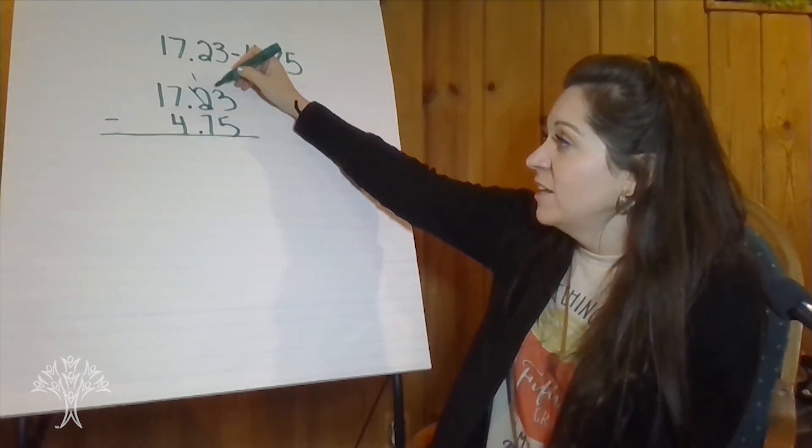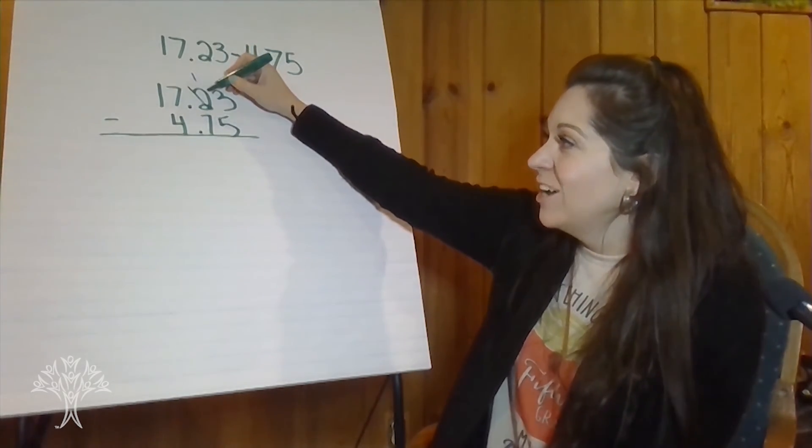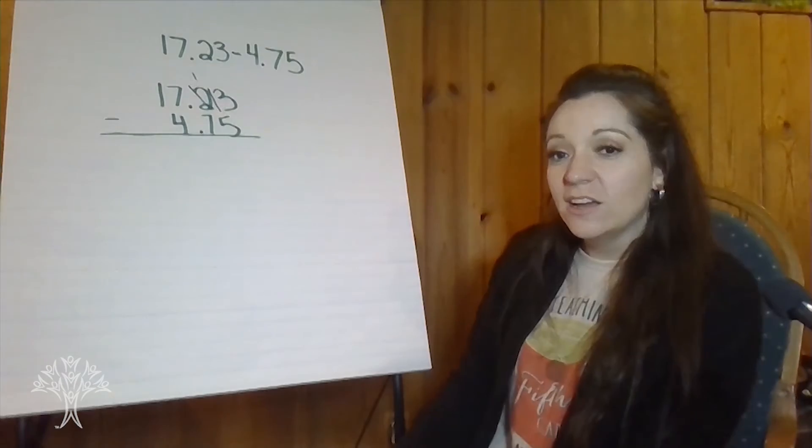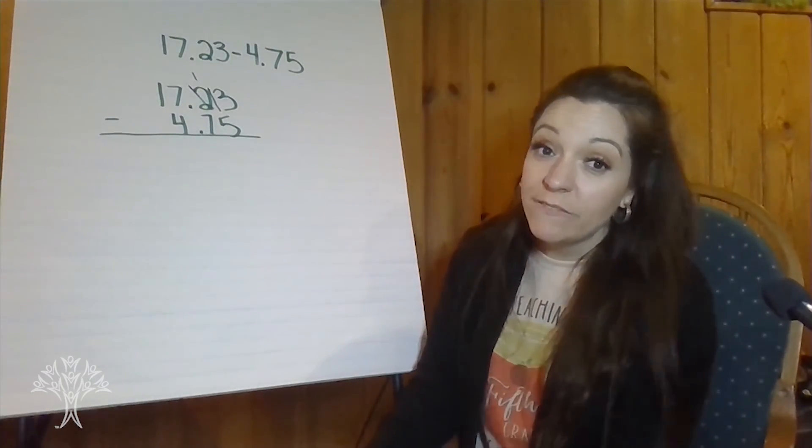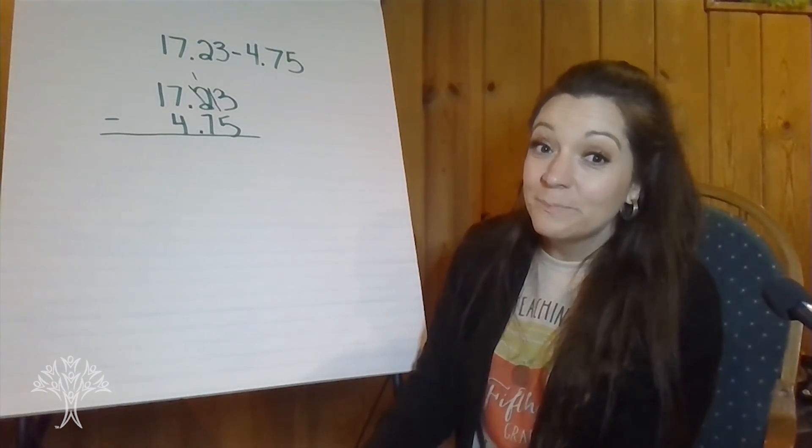So we're going to regroup from the tenths spot. And we're going to take that tenth and break it into ten hundredths. So now I have thirteen hundredths. Thirteen hundredths take away five hundredths. Eight hundredths.